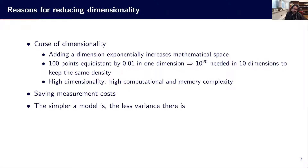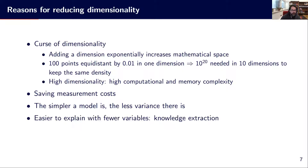Another important thing is that the simpler a model is, the less variance there is in that model. If we are able to reduce the dimensionality, we are often able to reduce the complexity of the model, so we could use simpler models with smaller dimensionality. Also, it is much easier to explain with fewer variables that have some physical or conceptual sense. If we reduce to five or ten dimensions, it is much easier to provide explanation, analyze the learned model, and make sense of it in terms of interpretation.